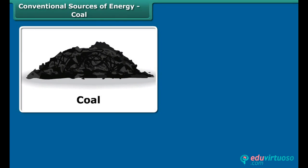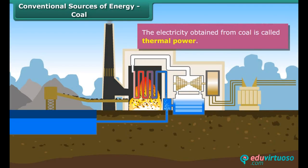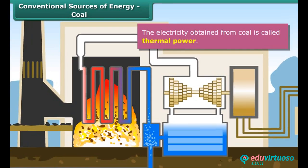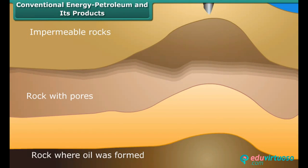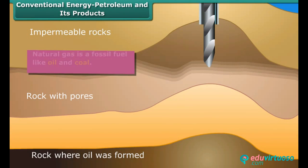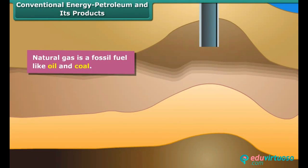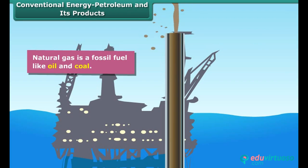Coal is the most abundantly found fossil fuel, which is used to generate electricity called thermal energy. Coal is found between the layers of rocks along with natural gas, and is drilled from oil fields located in offshore and coastal areas.